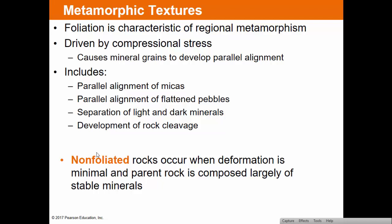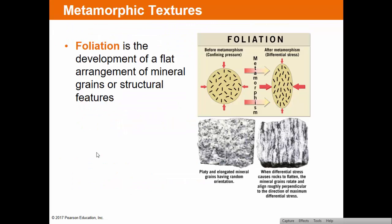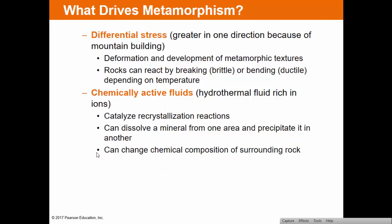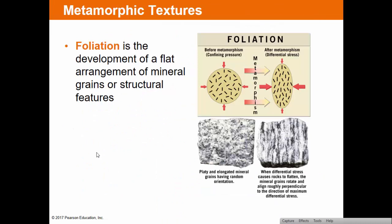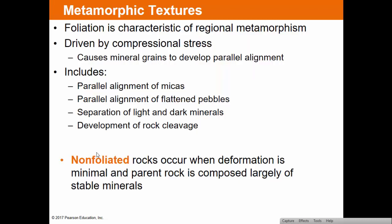Foliation is driven by compressional stresses and results in parallel alignment of micas, flattened pebbles, or separation of light and dark minerals into distinct bands. You can see light minerals lining up in one area and dark minerals in another. This foliation creates distinctive appearances — going from granite on the left to gneiss or schist on the right is a striking visual difference.